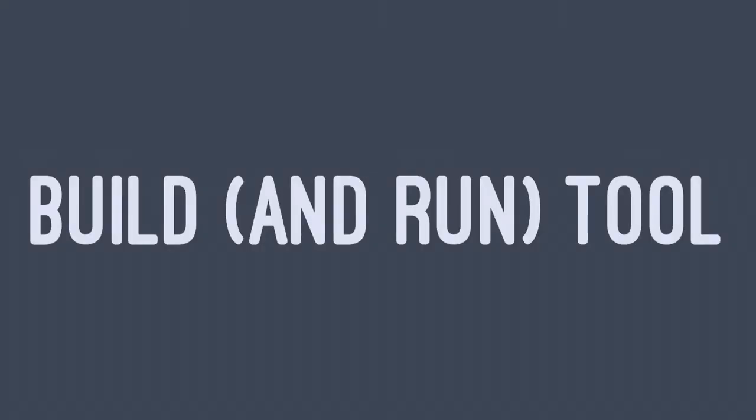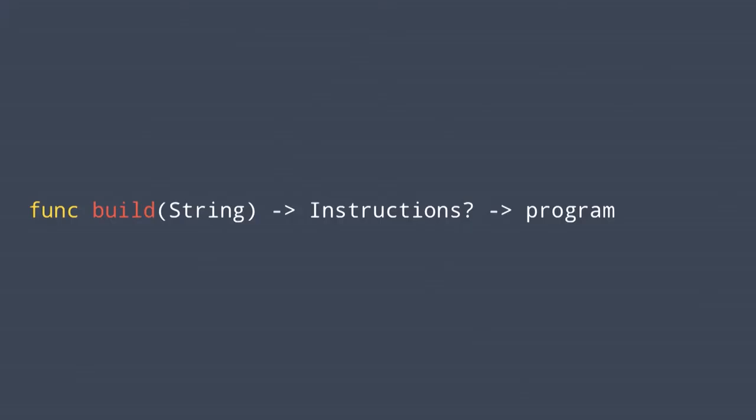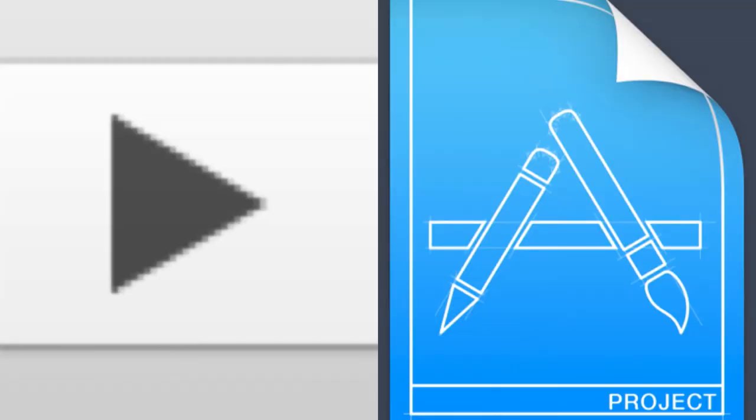But the more interesting thing is the build and run tool — this is the biggest thing we use Xcode for. It takes a string or an array of strings for the different files, an optional set of instructions, and gives you a program at the end of it. If you stay solely within Xcode, you press play and it works — sometimes. What does the play button actually do? Xcode and the build system is made up of a lot of things that aren't Xcode. Xcode is built up of little blocks of non-Xcode components. One of those blocks is the logging, which tells us how Xcode is using those blocks to build.